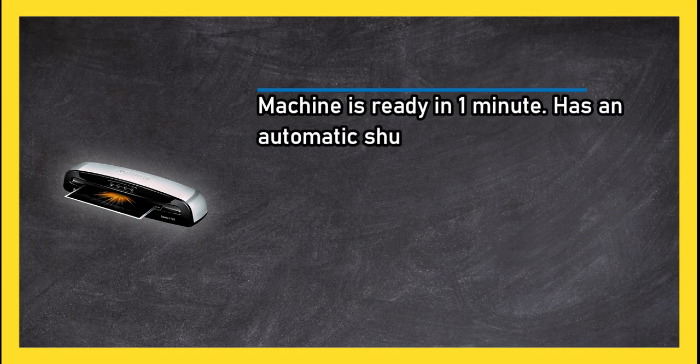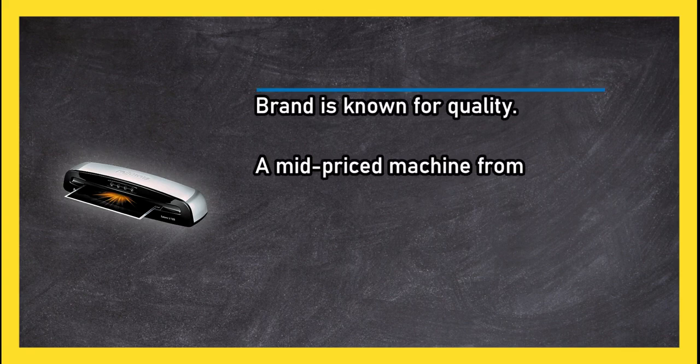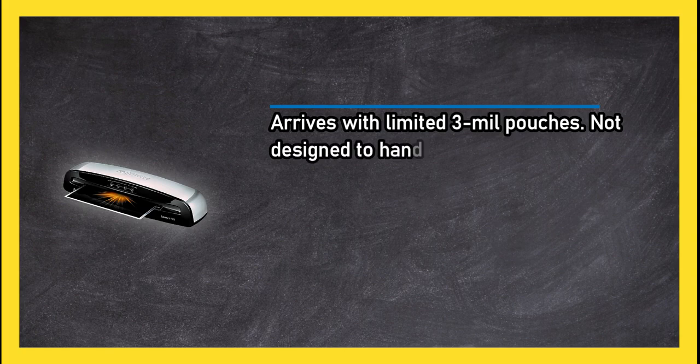At number three, Fellows laminator with starter kit. Machine is ready in one minute, has an automatic shut off, versatile wide width, brand is known for quality. A mid-priced machine from a leading manufacturer in office products. Arrives with limited 3 mil pouches, not designed to handle pouches thicker than 5 mils.